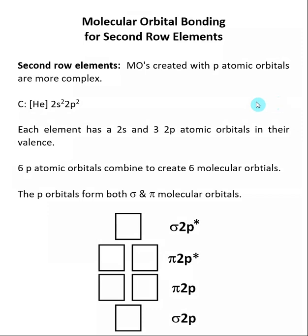Here we will be looking at the molecular orbital bonding for second row elements in the periodic table. Specifically, we will be looking at the second row elements in the P block. By second row, we mean that n is equal to 2, so that will be the top row in our P block on the periodic table.